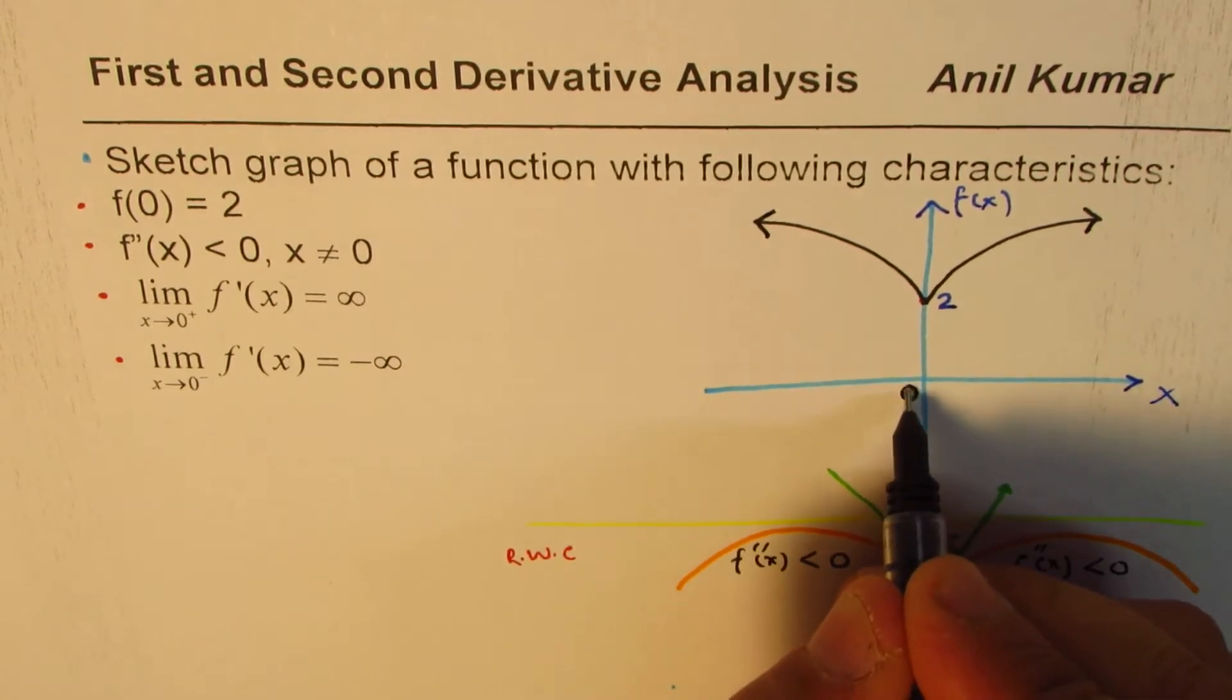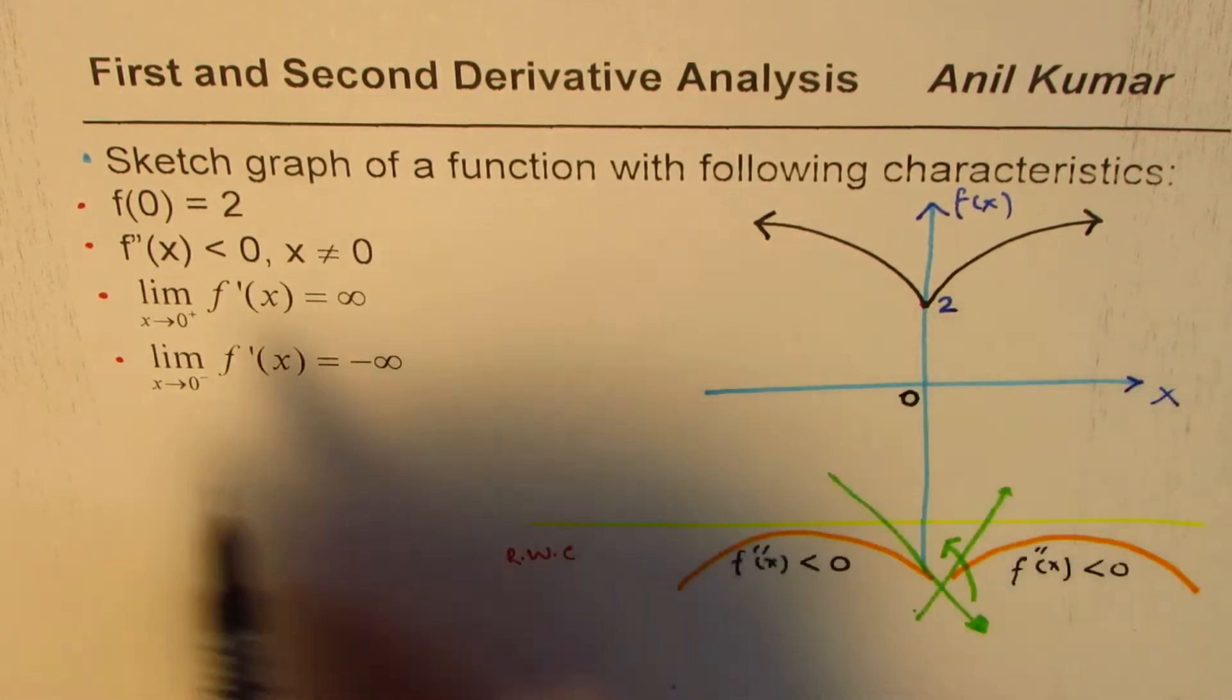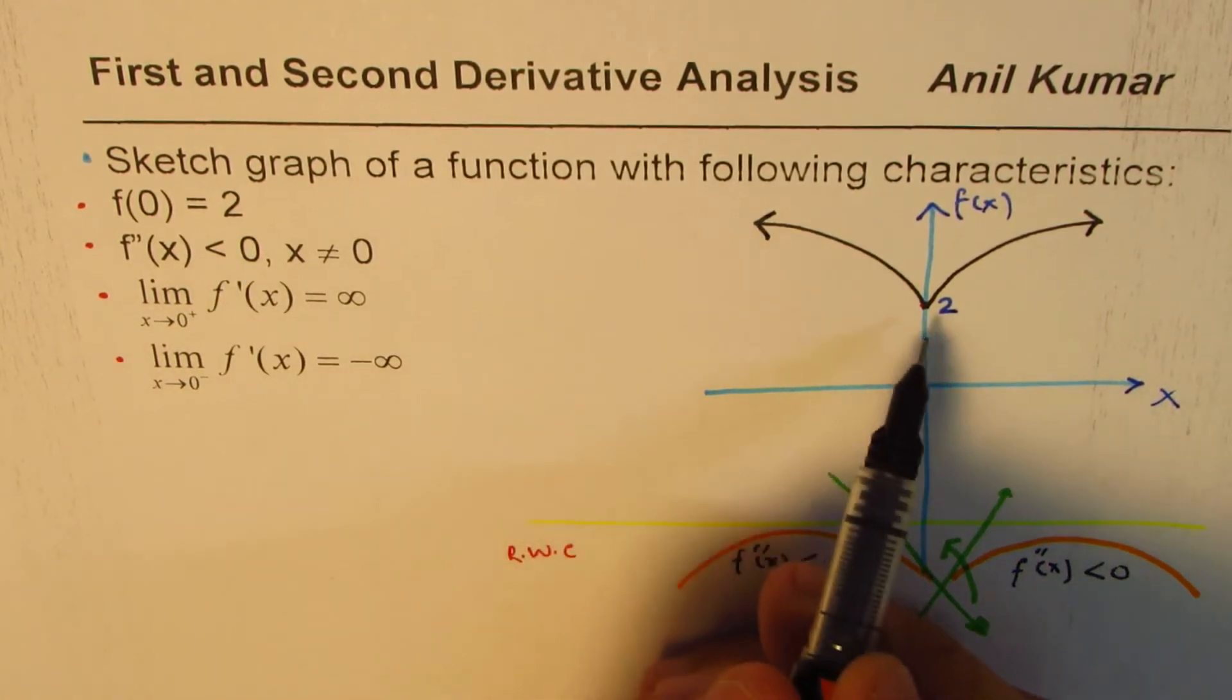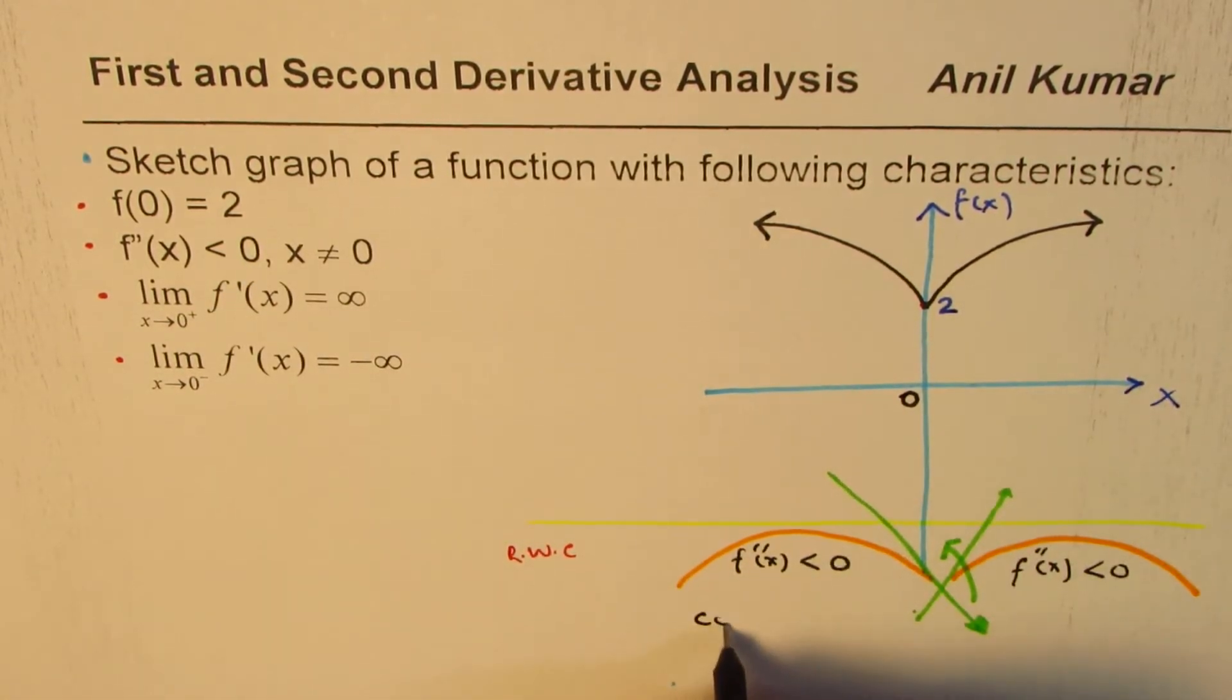At 0, the value is 2. The second derivative is less than 0. That means concave down. This means concave down.